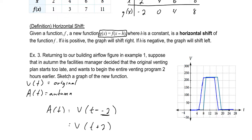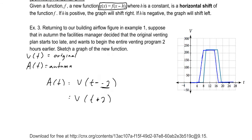Having t plus 2 moves the function to the left. This tends to throw people for a loop because it seems opposite. However, it actually makes sense: in our definition f of x minus h, there is already a minus sign. So if h is negative, then we have a plus. If h is positive, it remains a minus. This also makes sense when you consider the shifting of specific points.